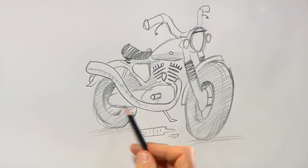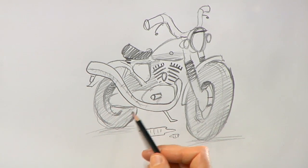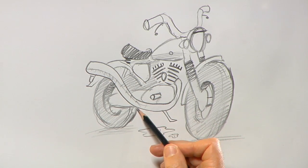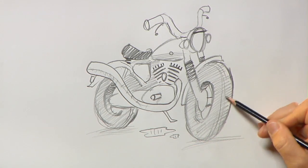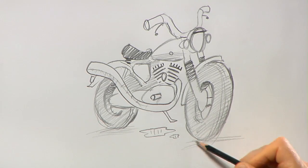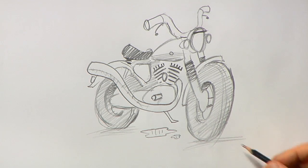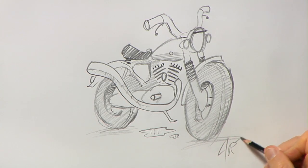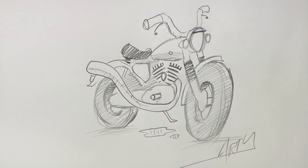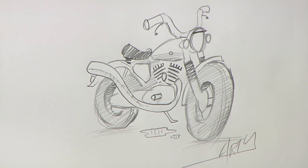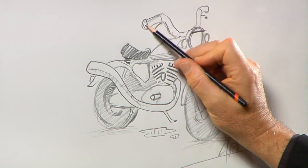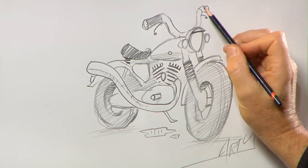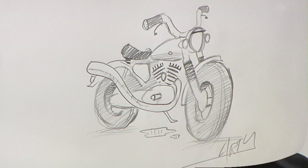All right. I don't know. What else should I do on this? Maybe some more treads on the tire. Give it a little more shape. All right. I think I'll sign it. Oh, you know what? I should color in those hand grips. There. That's better. Now it's done. All right.